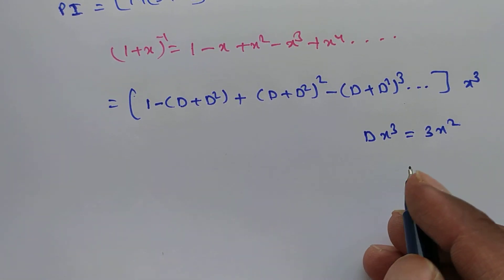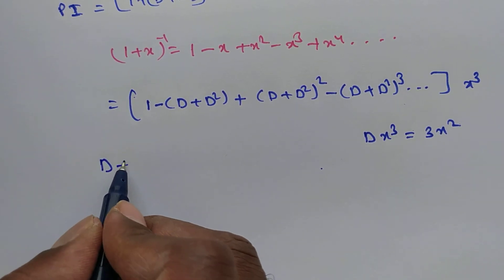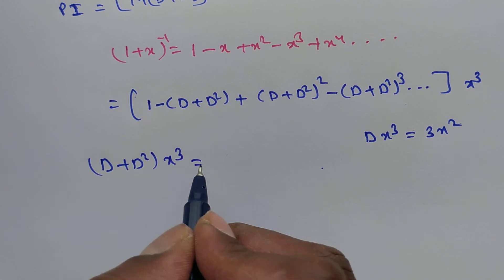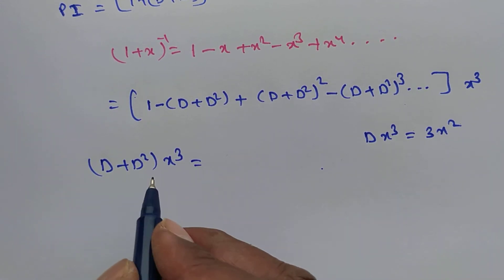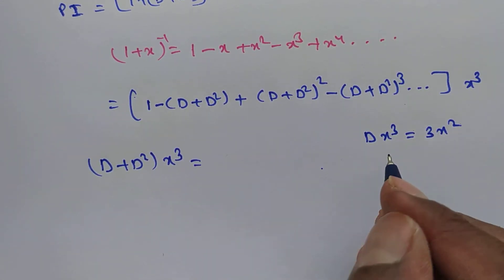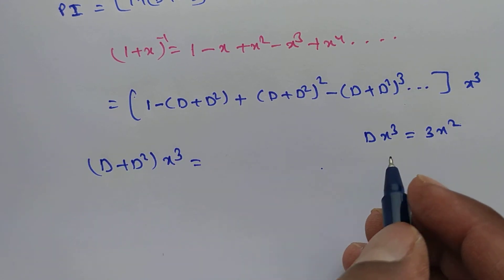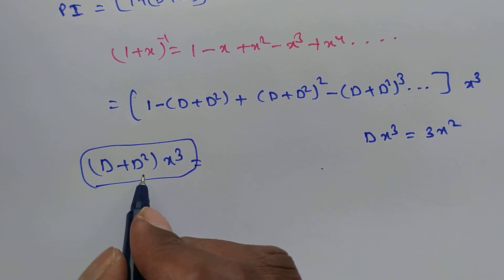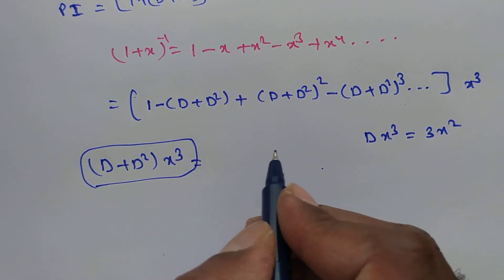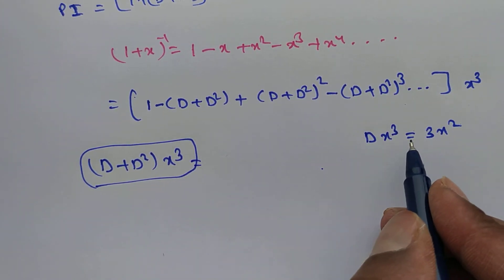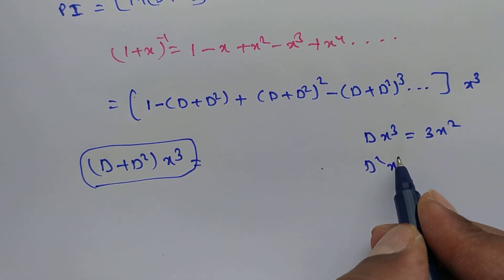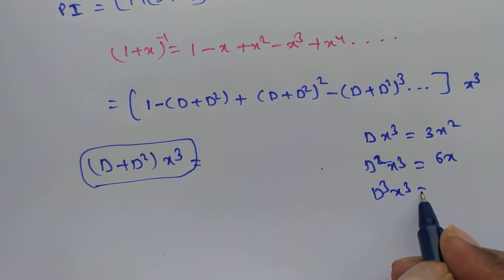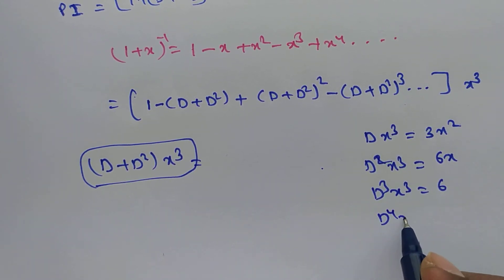We compute (D + D²)·x³, (D + D²)², and (D + D²)³ applied to x³. We have D(x³) = 3x², D²(x³) = 6x, D³(x³) = 6, and D⁴(x³) = 0. So (D + D²)·x³ = 3x² + 6x. Then we compute D²·x³ = 6x and 2·D³(x³) = 12, and finally −D³(x³) = −6.